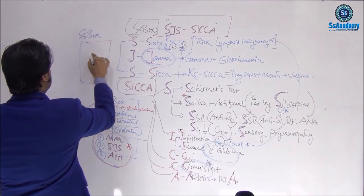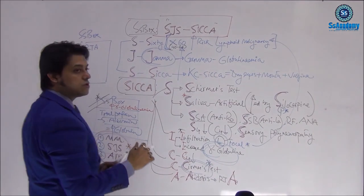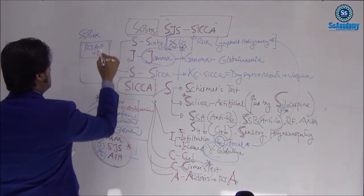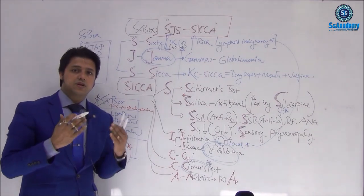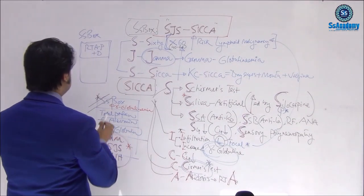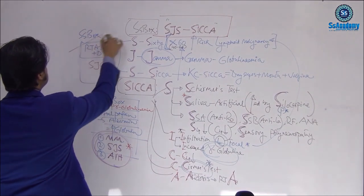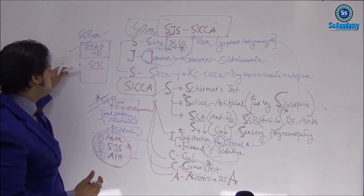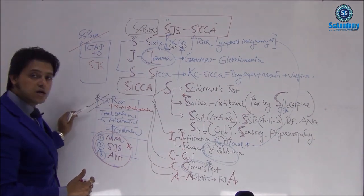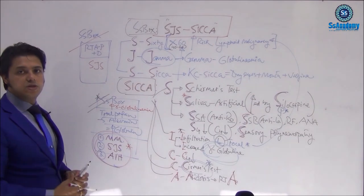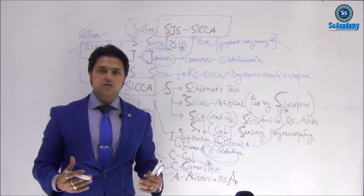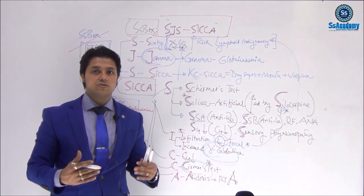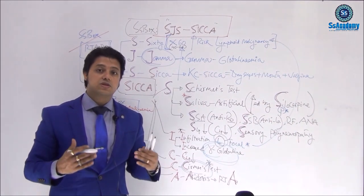An important additional box: renal tubular acidosis — both proximal and distal varieties — can be caused by Sjogren's syndrome. Also recall that hypergammaglobulinemia is seen in multiple myeloma, Sjogren's syndrome, and autoimmune hepatitis. Sjogren's syndrome SJS CICA ties all of this together. Thank you — I hope you enjoyed this lecture and that Sjogren's syndrome will be a hot exam topic for you.